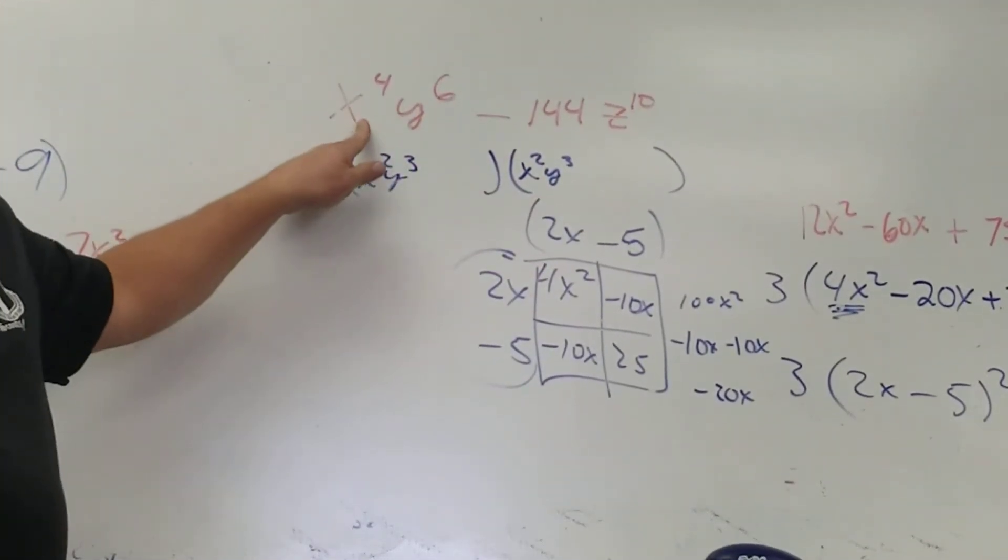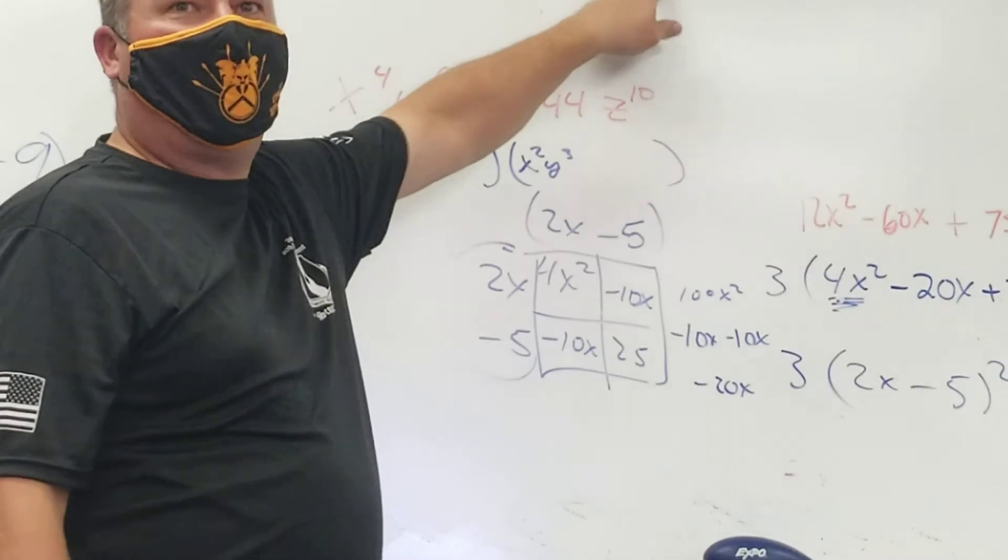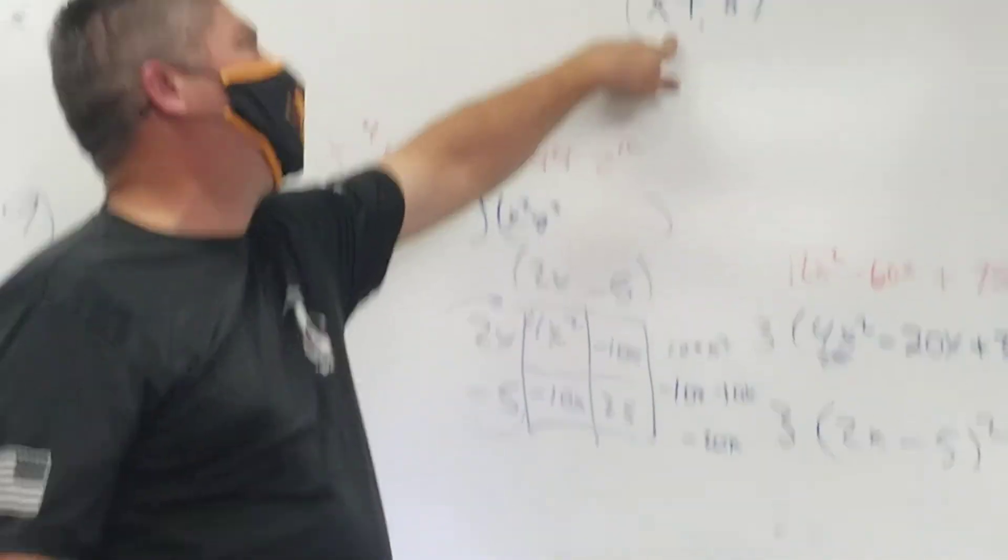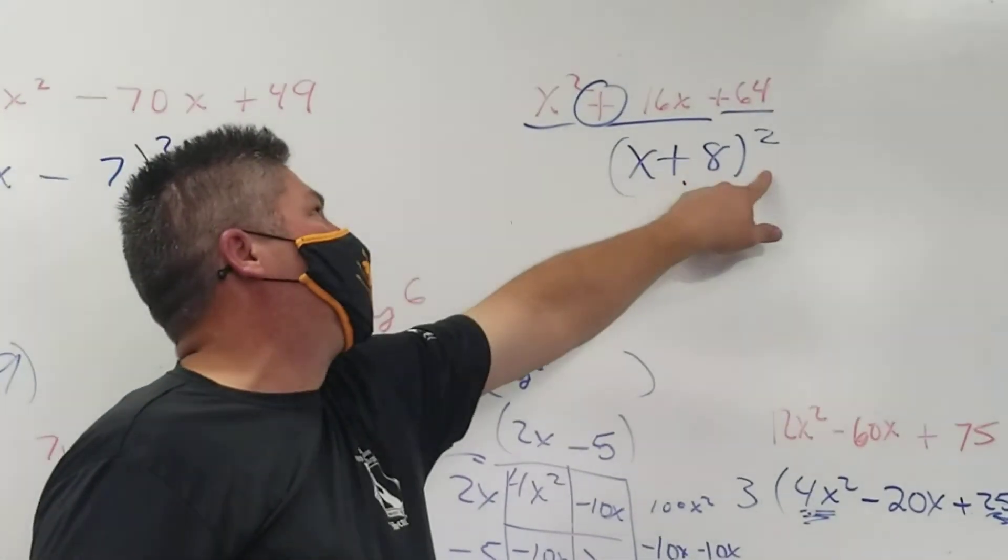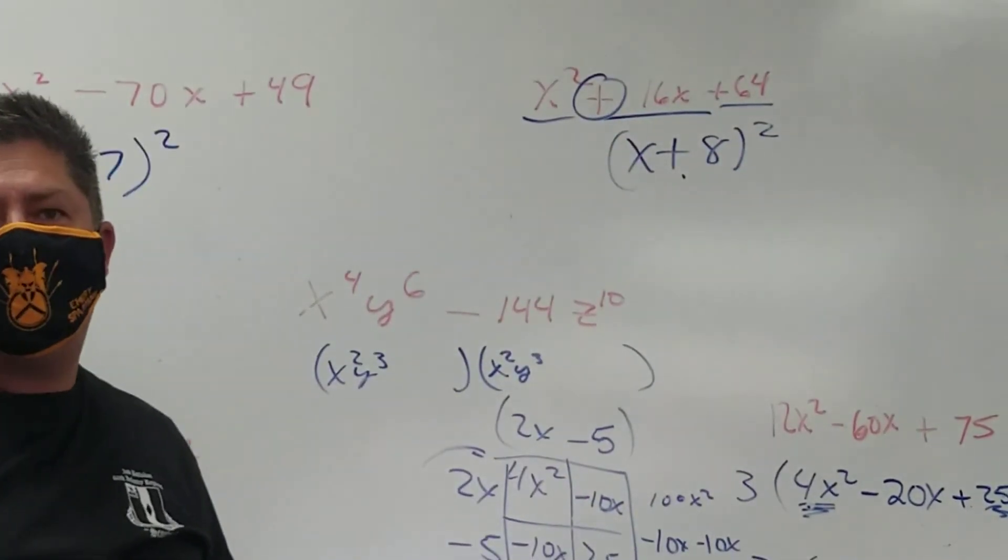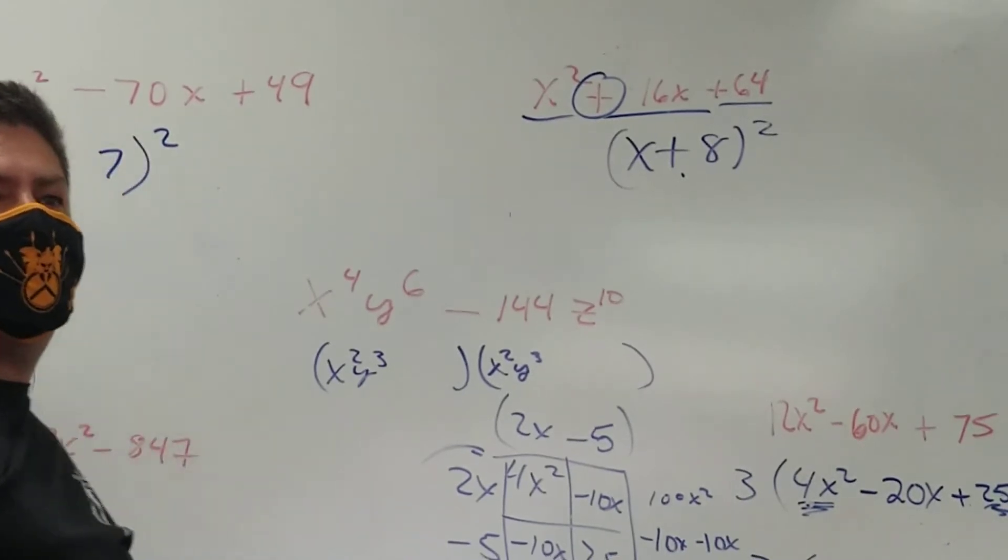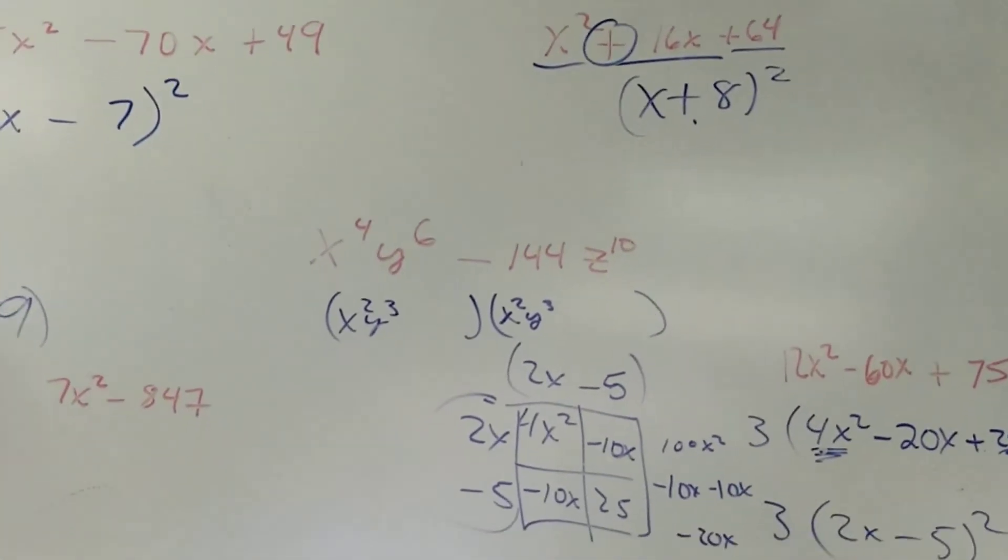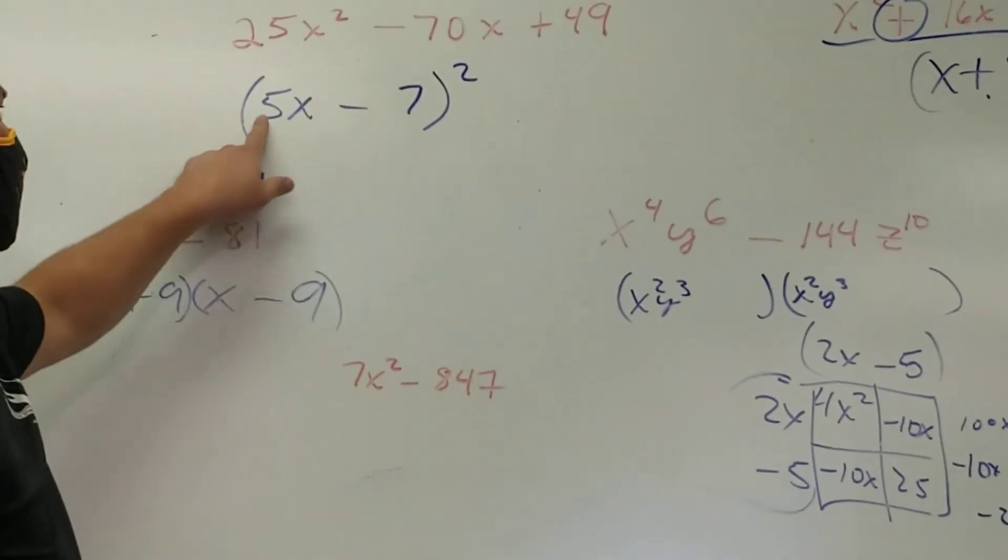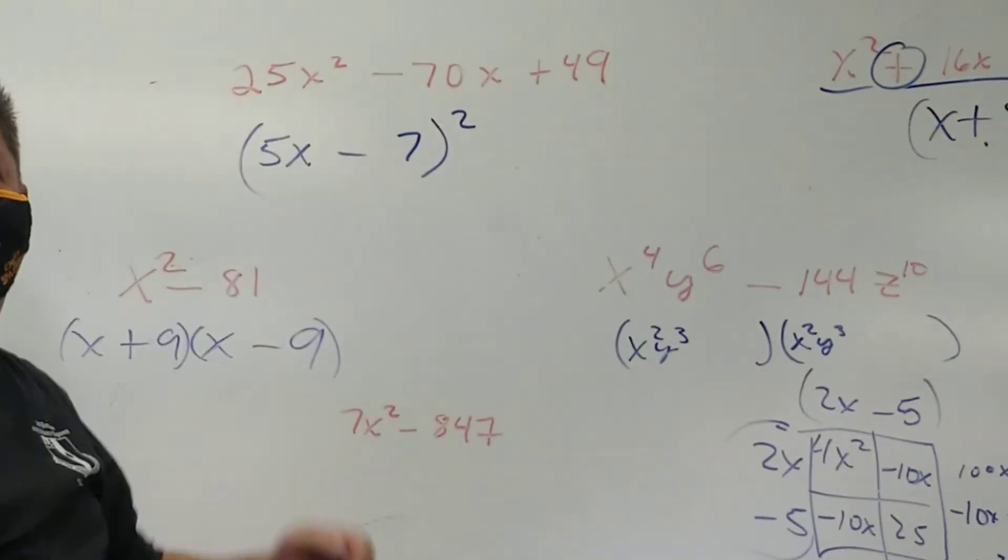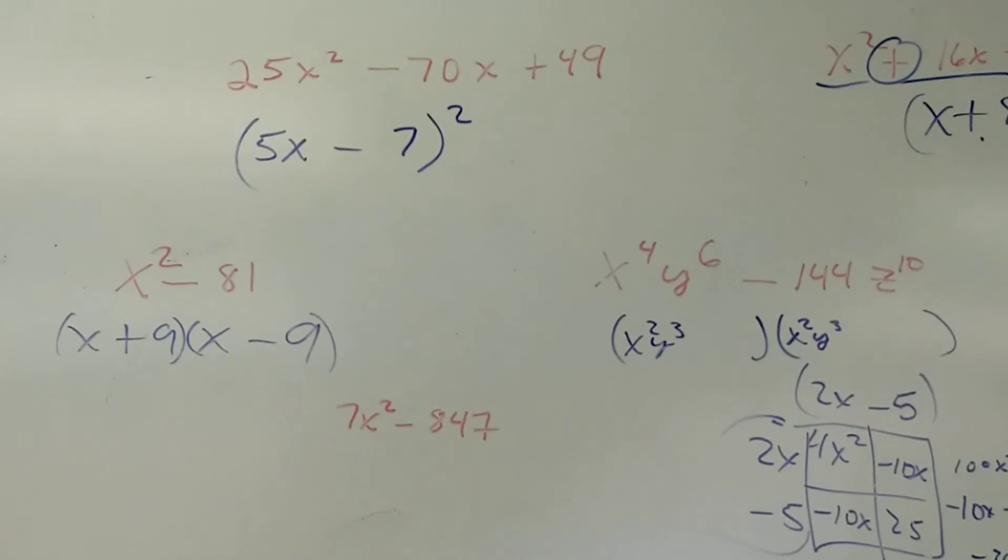By the way, that's true even here. x and x plus 8. x times x would give you what? x squared. By the way, that way that I used to do these, first term times second term times 2, that's the middle term. Did you notice that? Every one of those. First term times second term times 2, that's the middle term. Negative 35 times 2 is 7, negative 70. They're just perfect square trinomials.